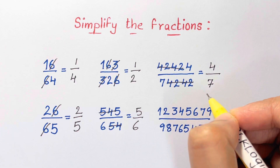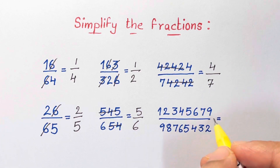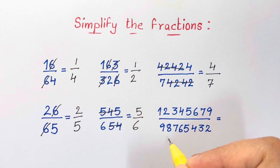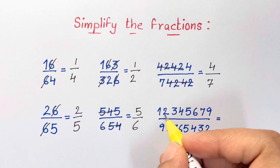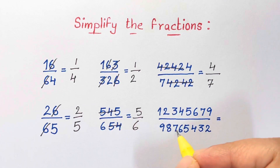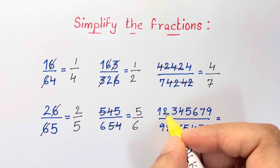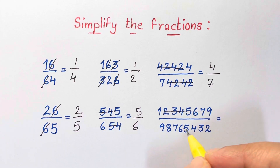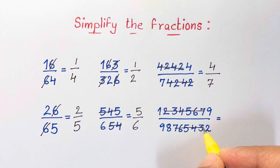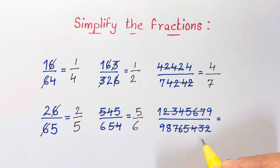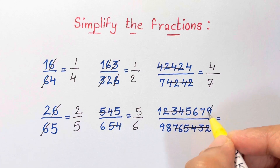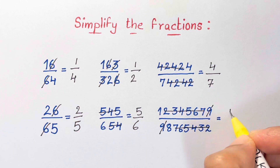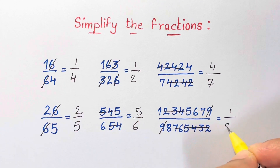The last problem is obviously the hardest, but I noticed something. There's a 2, 3, 4, 5, 6, and 7 at the top, and on the bottom it's the same digits in reverse. So we cancel all those out and then we cancel out the 9. We are left with 1 over 8.